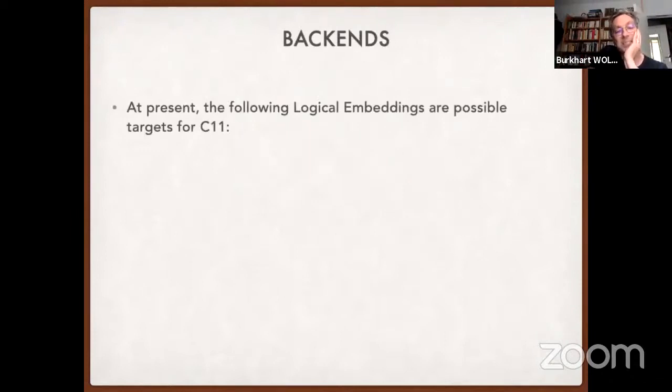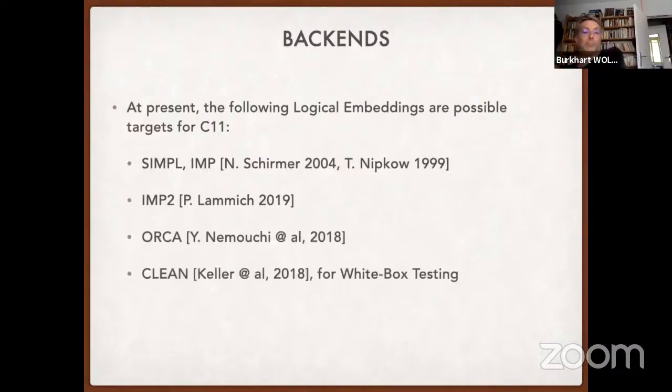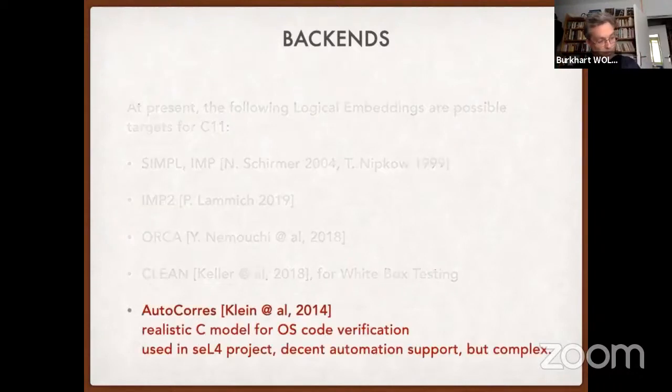With respect to the backends, we have at the moment the following choices: there's of course Simpl, which is a bit older; there's a recent and very nice IMP 2 by Peter Lammich; there's Orca by Jakub Nimoshi and the C-lean for white-box testing, which I will briefly present here; and there's of course AutoCorres by the NICTA group, which was basically introduced and presented around 2014.